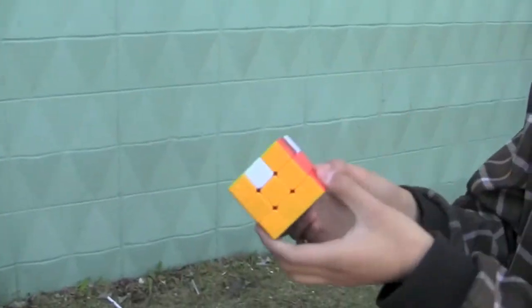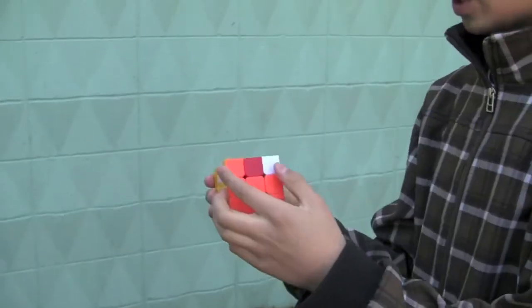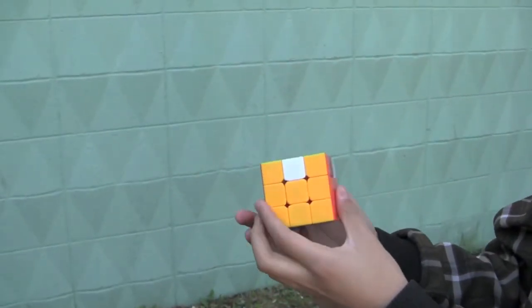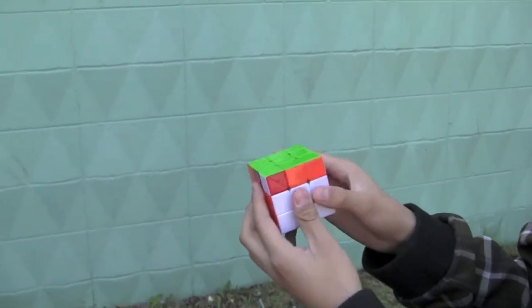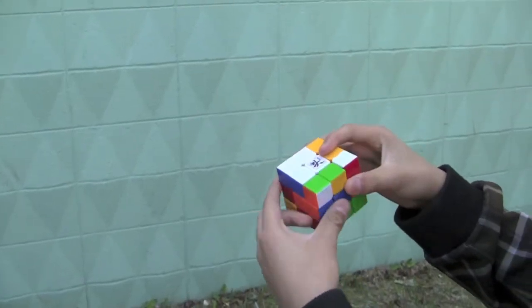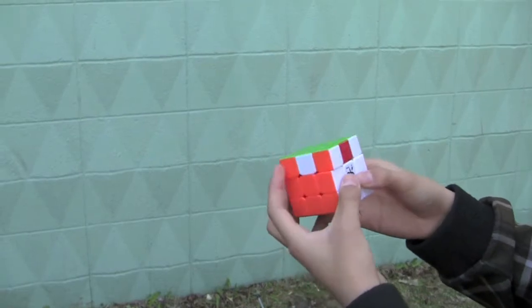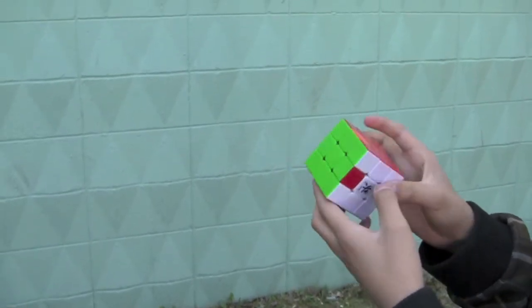Now, as you can see, you have headlights. After headlights, you must complete the other two corners by doing the algorithm again with the headlights on the back face. Now you've completed the corners.